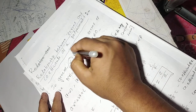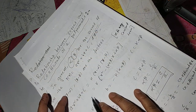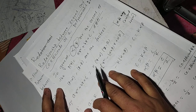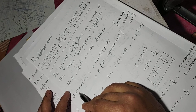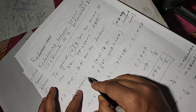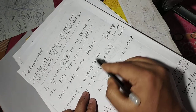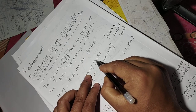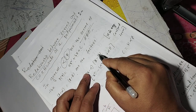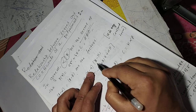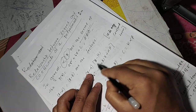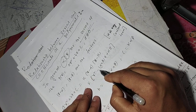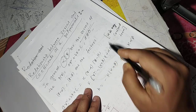If alpha and beta are the zeros of the polynomial, then x minus alpha and x minus beta are the factors of the polynomial. So ax squared plus bx plus c equals k times x minus alpha into x minus beta, where k is any constant term. Expanding: k times x squared minus alpha plus beta times x plus alpha beta.